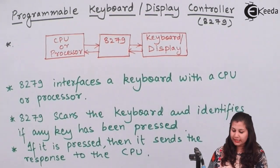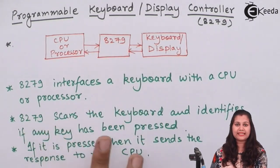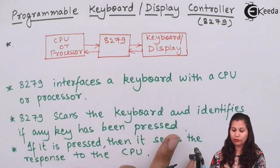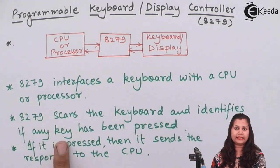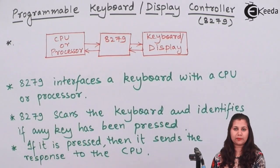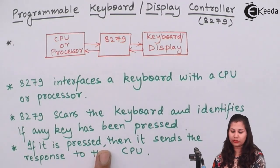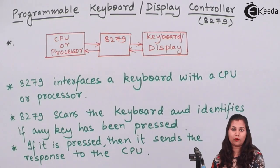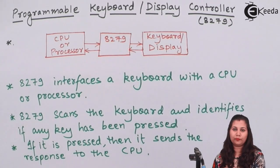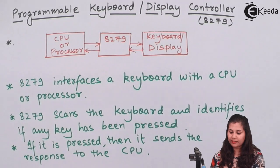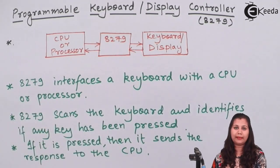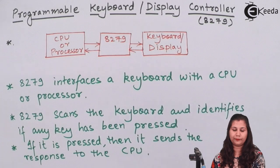The 8279 scans the keyboard and identifies if any key is pressed. If a key is pressed, it sends the relative response of the pressed key to the CPU. This is the function of the 8279 programmable keyboard display controller.